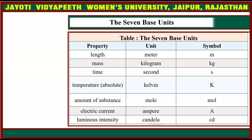This table shows the 7 base SI units with their properties, units, and symbols. For length, we use the meter and the symbol is small m. For mass, we use the kilogram and the symbol is kg. For time, the unit is seconds and the symbol is small s.